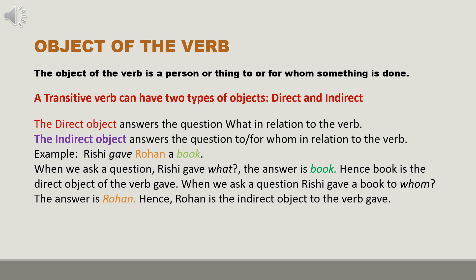The object of the verb is a person or thing to or for whom something is done. A transitive verb can have two types of objects: direct and indirect. The direct object answers the question 'what?' in relation to the verb. The indirect object answers the question 'to or for whom?' in relation to the verb.